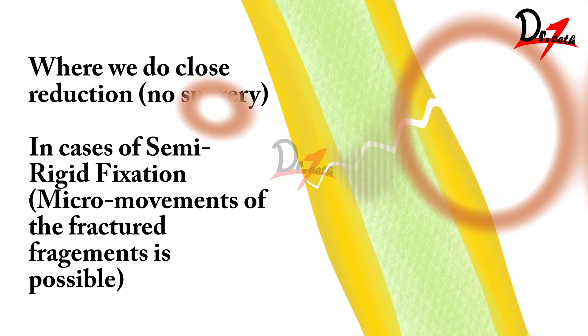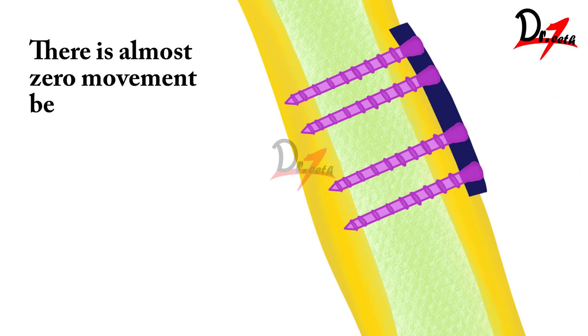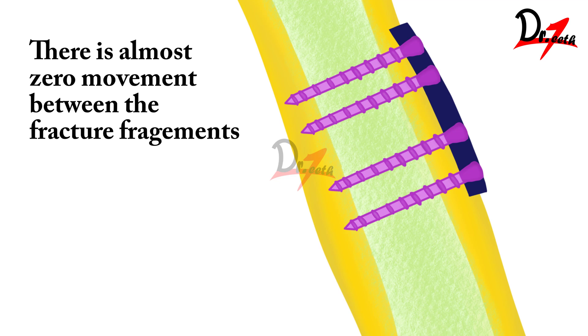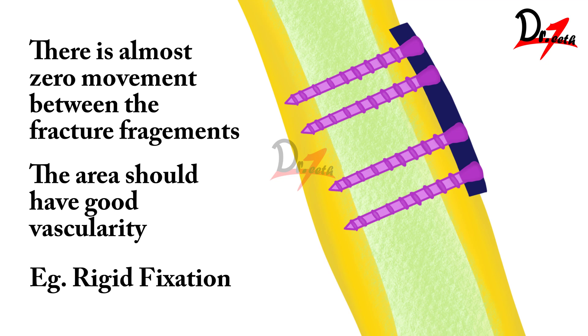Coming to primary intention: this healing happens when there is minimal or no mobility in the fracture fragments. What types of fractures heal by primary intention? When there is excellent contact between the fractured fragments — such as when we do surgery, reduce the fracture fragments, bring them very close in approximation, and they stay there without micro movements — in those cases we have primary healing. There should also be good vascular supply in that area. In rigid fixation — using compression plates or reconstruction plates — these plates don't allow any movement between the fracture fragments, so healing occurs by primary intention.